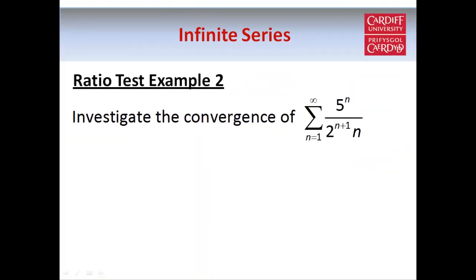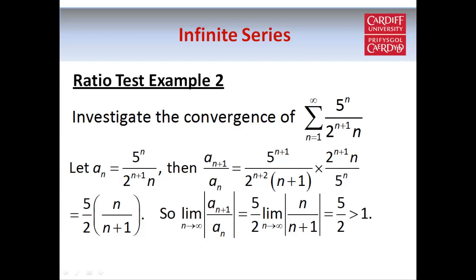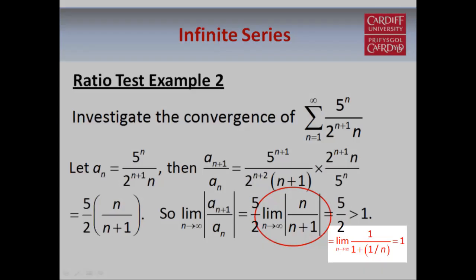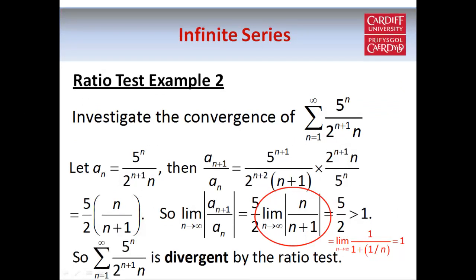Here's another example of the ratio test. This time we have the series 5^n over 2^(n+1) times n. Using a similar method, we start by working out the ratio a_{n+1}/a_n, and after some simplifications we find that it's equal to (5/2) times n/(n+1). Taking the limit as n tends to infinity, we take the 5/2 outside the limit, and find that the limit of n/(n+1) is equal to 1 — you can see this by dividing numerator and denominator by n and applying the algebra of limits. So our limit is 5/2 times 1, which is 5/2. Since this is greater than 1, by the ratio test this is a divergent series.